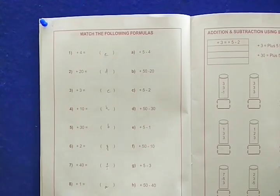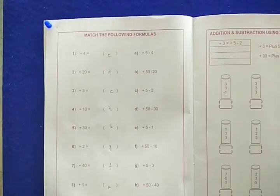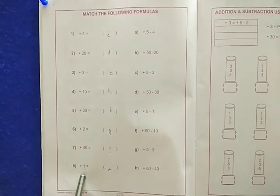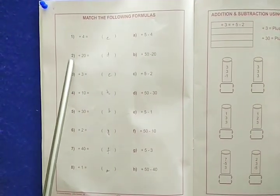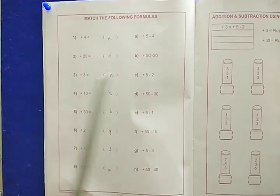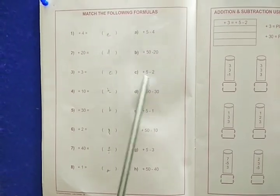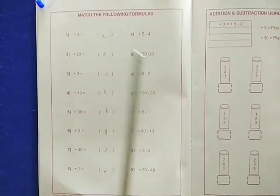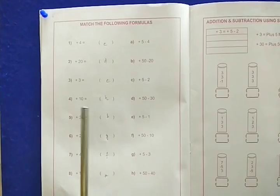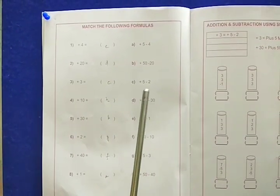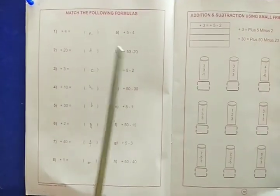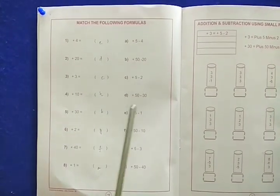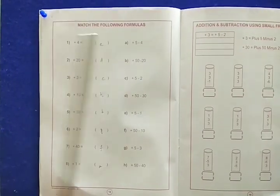Please listen carefully. On this side all the formulas are given. Left side numbers are 1, 2, 3, 4 and right side letters are A, B, C, D, E, F, G, H. The right side formulas are given in elaborate form. You have to choose the correct answer and write the corresponding alphabet over the matching number.